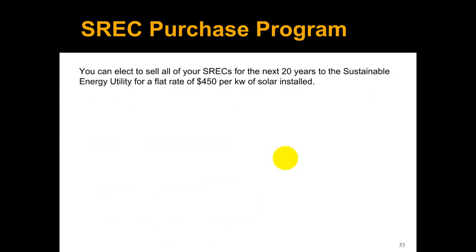The last option is the SREC Purchase Program — you get rid of all your SRECs on day one of your system. The Sustainable Energy Utility of Delaware, or SEU, will give you a flat rate of $450 per kilowatt of solar installed. So for a two-kilowatt system, you'd receive $900 upfront, and they've purchased your SRECs for the next 20 years. This is the least risky option since you know exactly what you'll get upfront, but you should evaluate whether it's the most beneficial in your cash flow analysis.